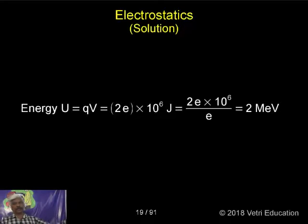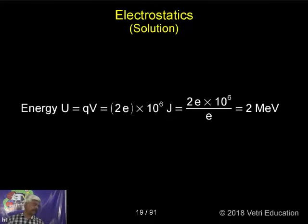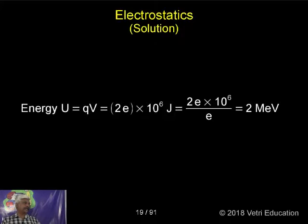As we have seen, the work done is Q into V — simply multiply. So the kinetic energy is 2e into 10 power 6, that is 2 mega electron volt.